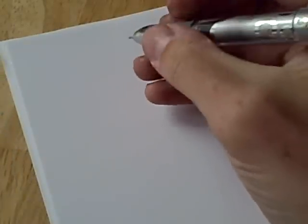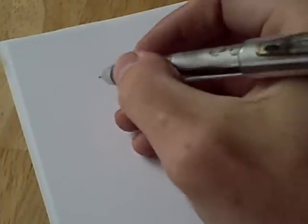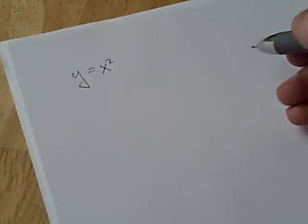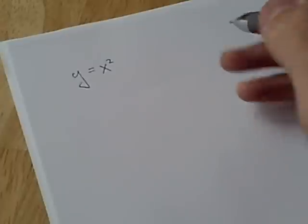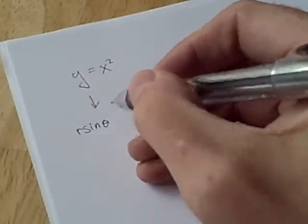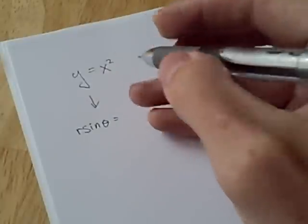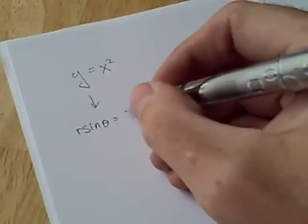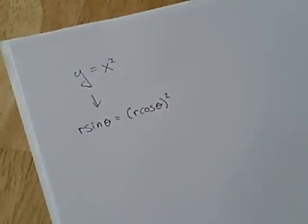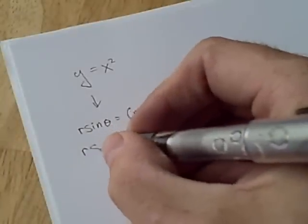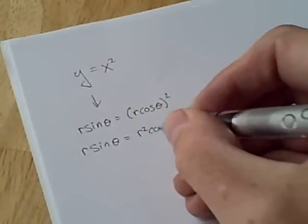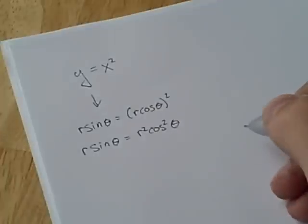Let's take a look at a couple of equations that are in rectangular form and write them in polar form. We'll start knowing that y is r sine theta and that x is r cosine theta. So we'll have r sine theta equals r squared cosine squared theta.